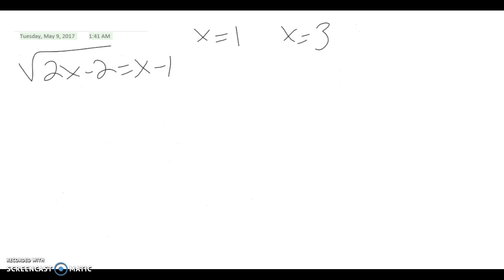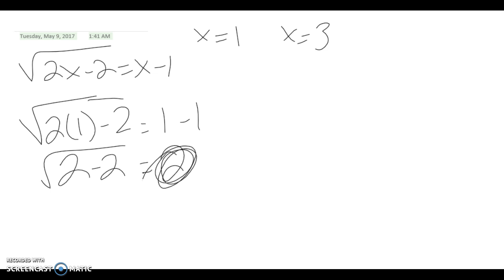Our original problem was the square root of 2x minus 2 equals x minus 1. We're going to plug in 1 first. So that's the square root of 2 times 1 minus 2 equals 1 minus 1. That's 0 equals 0. So then we have 2 minus 2 is 0, square root of 0 equals 0. That's right.